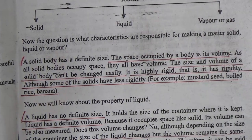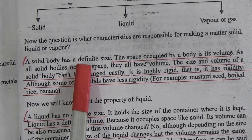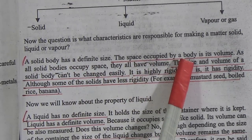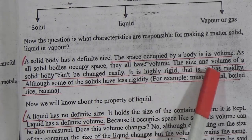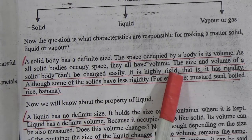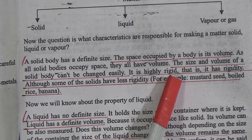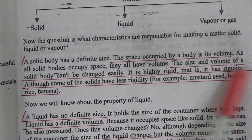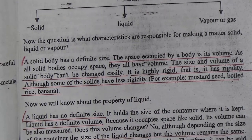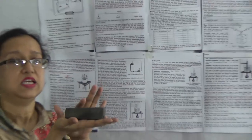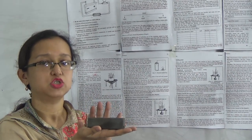A solid body has a definite size. The space occupied by a body is its volume, and all solid bodies have volume. The size and volume of a solid body cannot be changed easily — it is highly rigid, meaning very strong and not flexible. As I hold this stone, it is a solid thing: it has a definite size, shape, and volume, and when I place it on the table, it takes up a definite space.